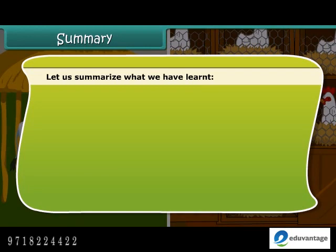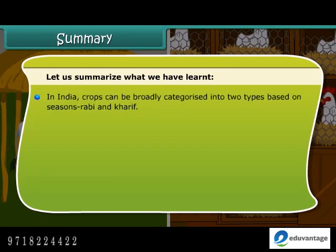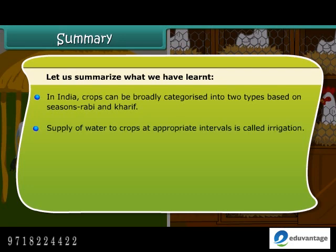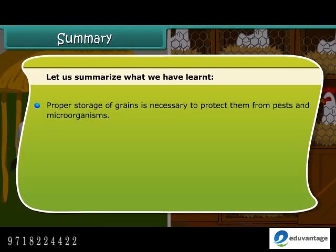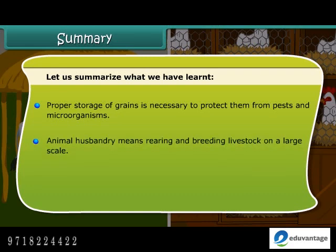Now friends, let us summarize what we have learned so far. In India, crops can be broadly categorized into two types based on the seasons they are grown in: Rabi and Kharif. Supply of water to crops at appropriate intervals is called irrigation. Harvesting is the cutting of the mature crop manually or by machines. Separation of the grains from the chaff is called threshing. Proper storage of grains is necessary to protect them from pests and microorganisms. Animal husbandry means rearing and breeding livestock on a large scale.